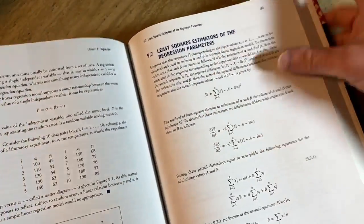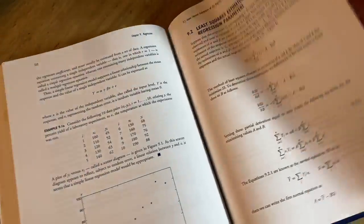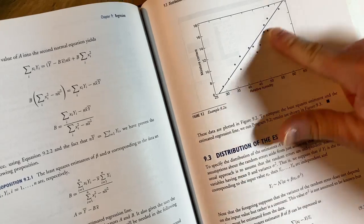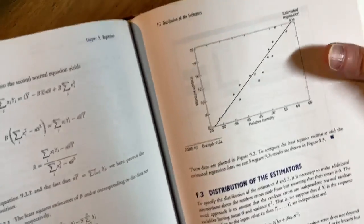Yeah, here we go. Least squares, estimators of the regression parameters. See if we can see a picture, see if there's a nice graph. Here we go. Here's a graph. So here's the regression line. And these are the data points. You see those there.